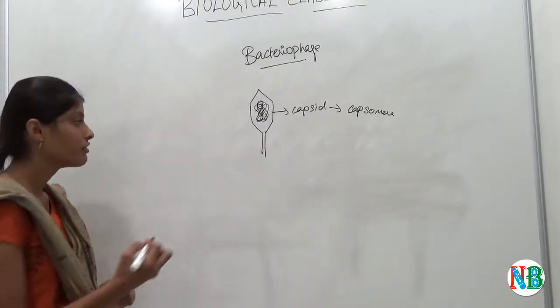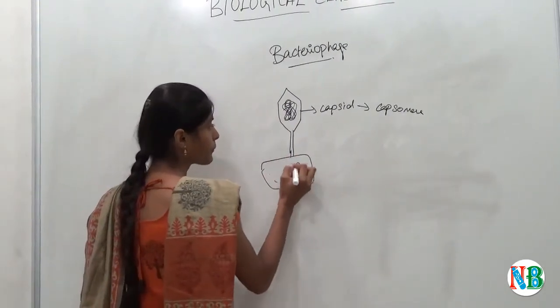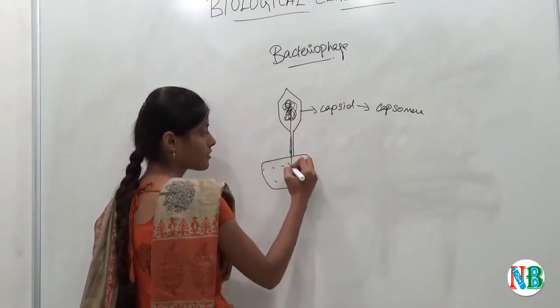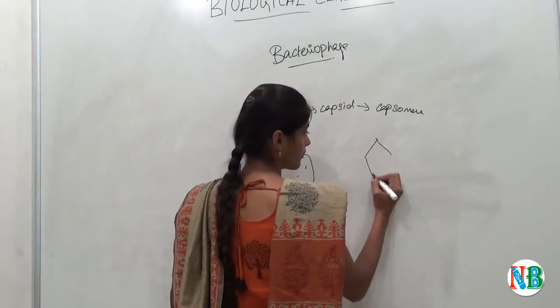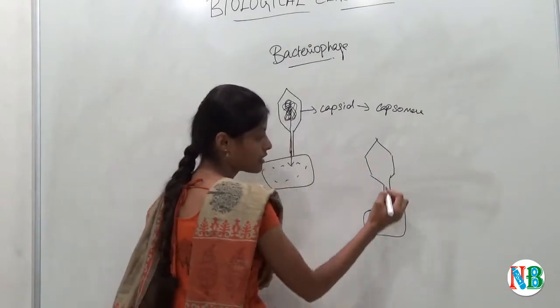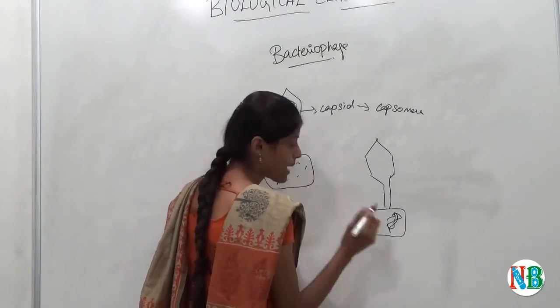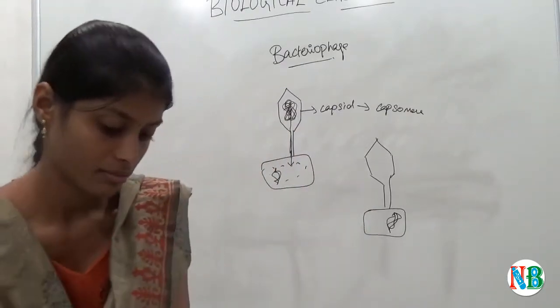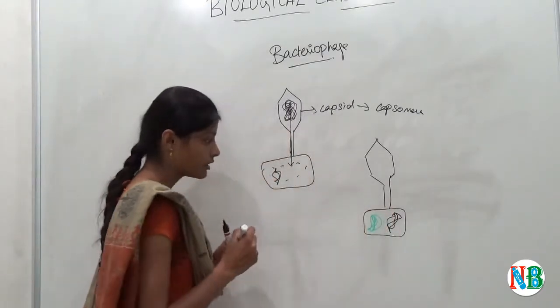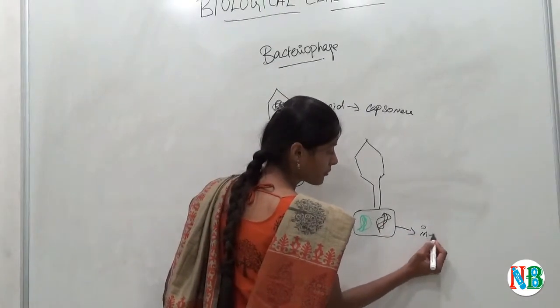Now we will see how it infects bacteria. So this is a bacterial cell. This nucleic acid will go into this cell. So this nucleic acid or DNA will come to this bacteria and this bacteria also have one DNA. So these two things will mix and thereby it will infect bacteria.